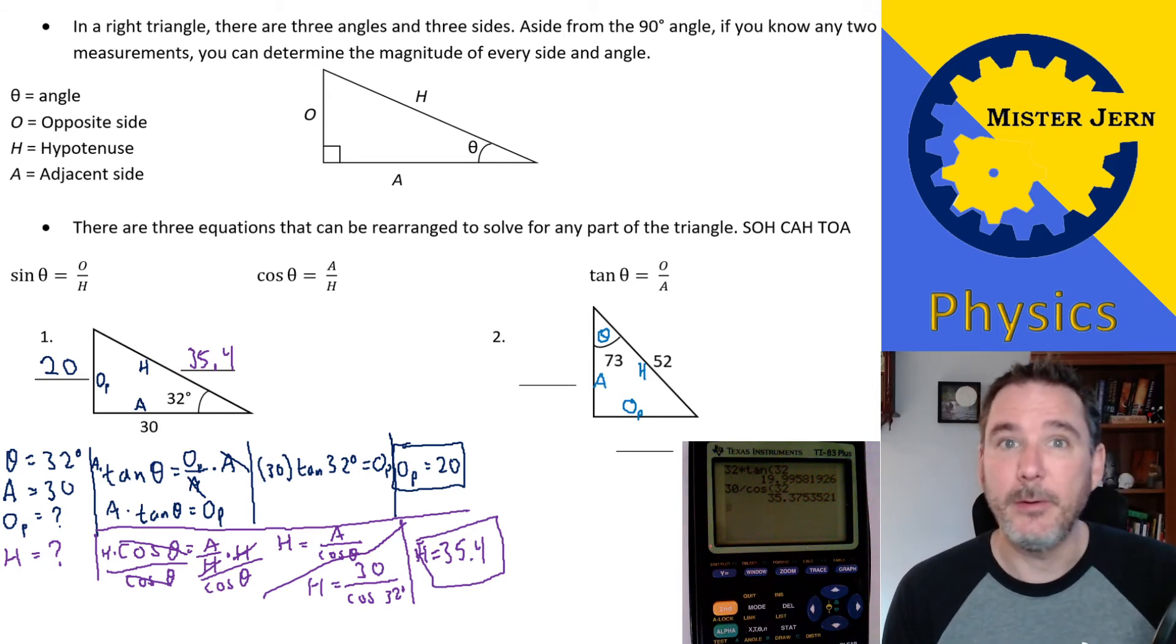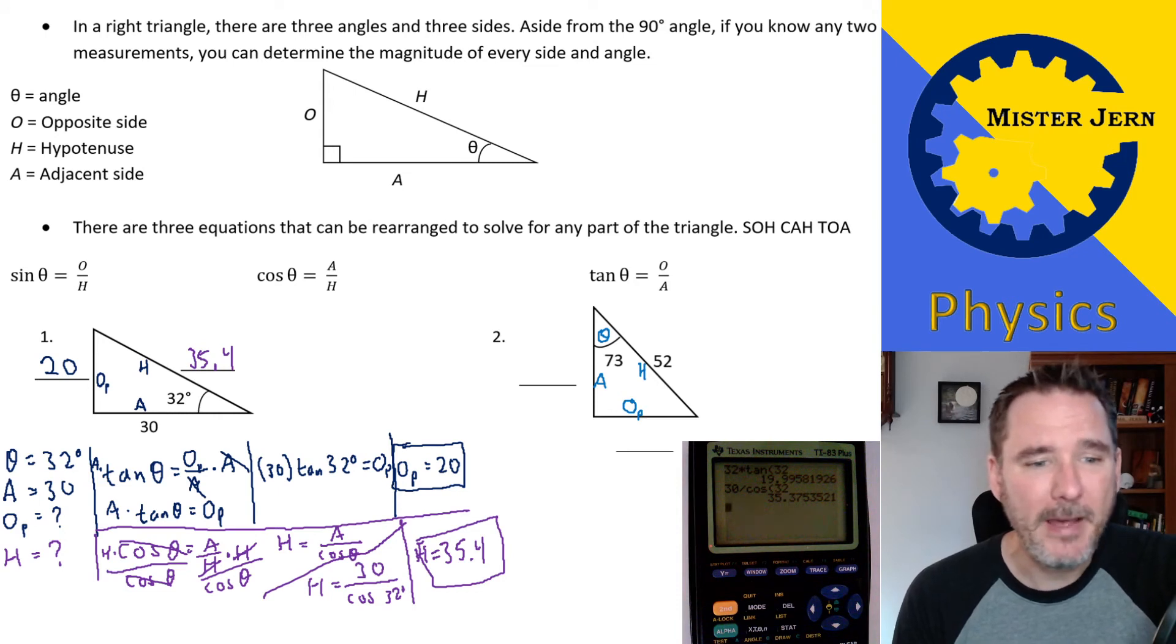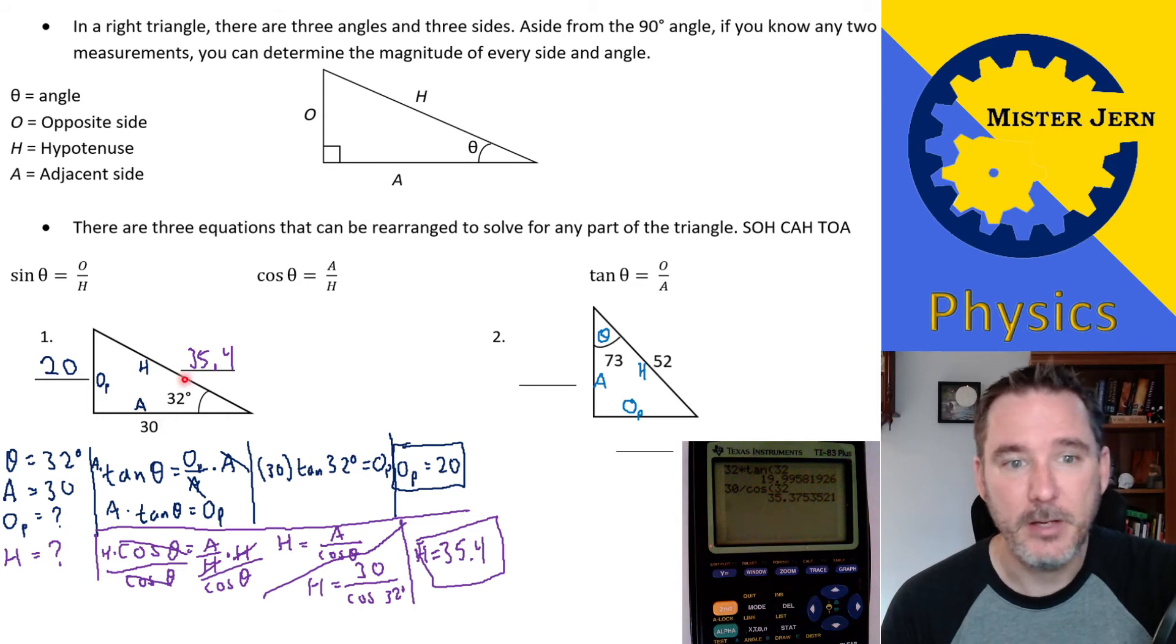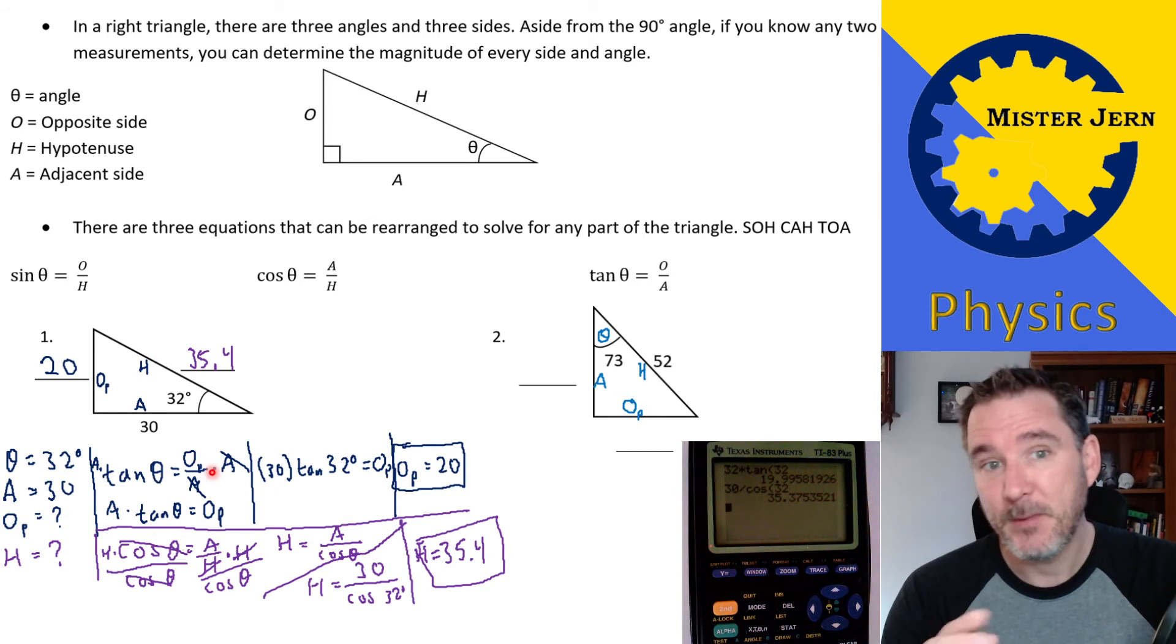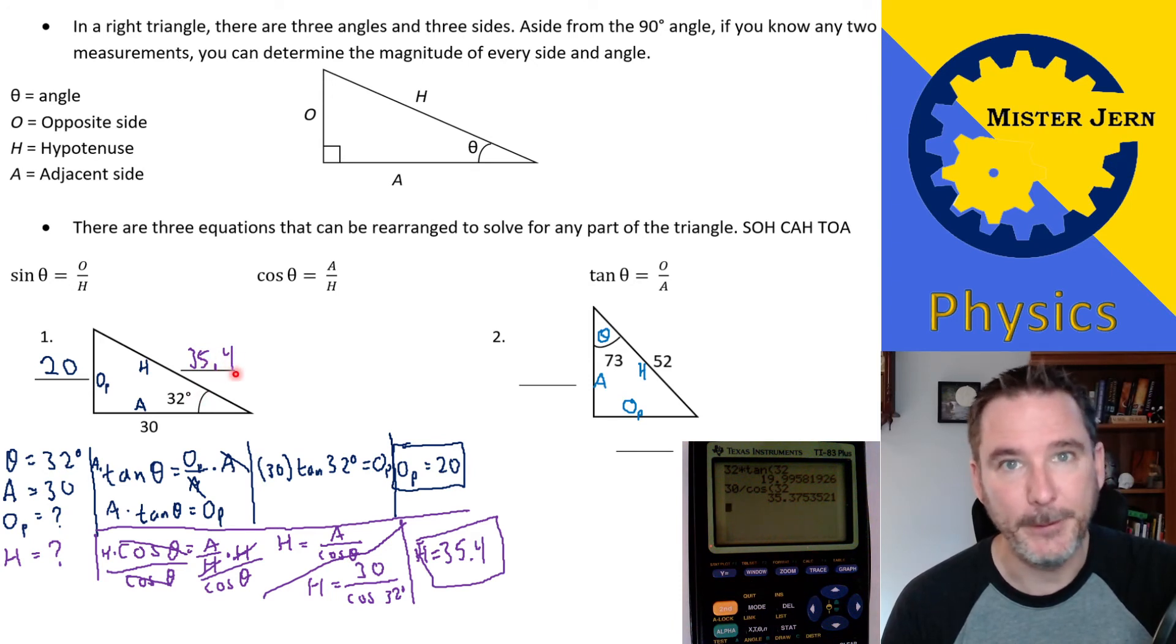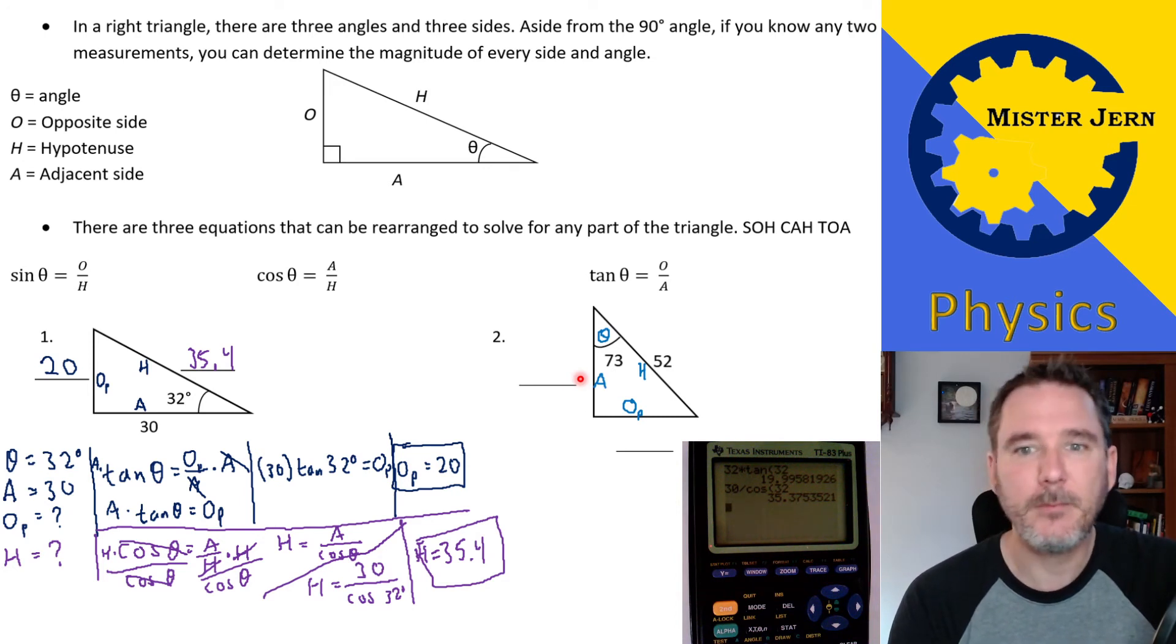So that's essentially how you use SOHCAHTOA to find the different sides. Now you could also, by the way, there's other ways to do it. Math is great because there's so many different ways that you can do something that's correct. Once you found the 20 and the 30, couldn't you use the Pythagorean theorem to find 35.4? Of course you could. But we're practicing using SOHCAHTOA. So I wanted to continue using SOHCAHTOA. In fact, go ahead and try it out. 20 squared plus 30 squared is going to be equal to 35.4 squared. We're pretty close because we did round a little bit. So try it out. You'll find that it is a good check for this. Same thing with all the triangles. You could always use other math to check your work.